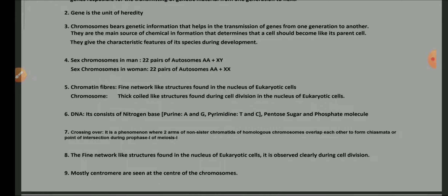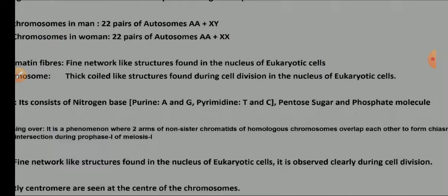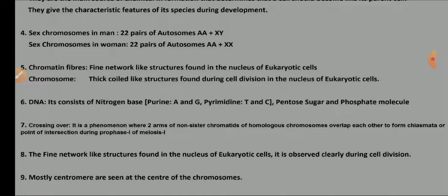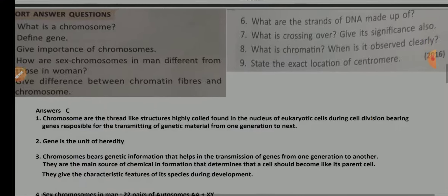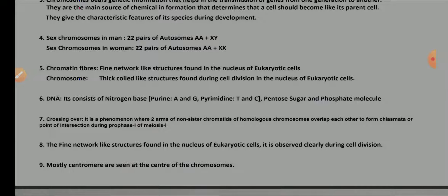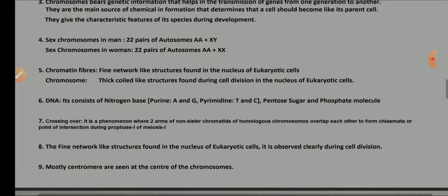What is crossing over? It is a phenomenon where two arms of non-sister chromatids of homologous chromosomes overlap each other to form a chiasma — the point of intersection — during prophase I of meiosis I. What is chromatin and when is it observed clearly? Chromatin are fine network-like structures in the nucleus of eukaryotic cells, observed clearly during cell division at the time of chromosome formation. The centromere is mostly seen at the center of the chromosome.